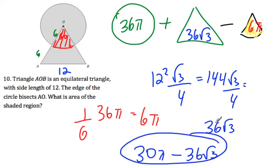If you're not sure why we subtract the overlap region, refer back to the beginning of the chapter and formula sheet. It explains double-counting the overlap region. If you're unsure about the areas for a triangle, equilateral triangle, circle, or part of a circle, also refer back to that section.